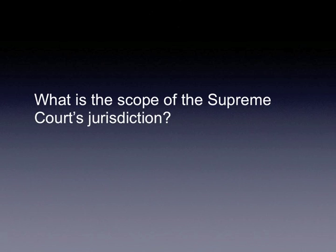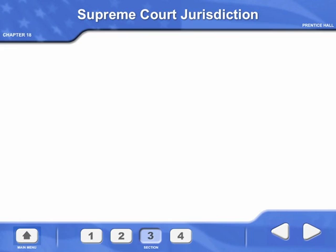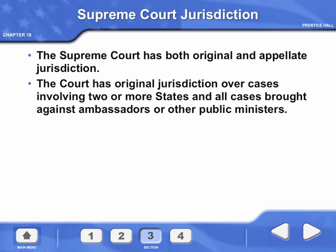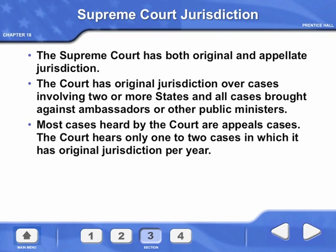What is the scope of the Supreme Court's jurisdiction? The Supreme Court has both original and appellate jurisdiction. The court has original jurisdiction over cases involving two or more states and all cases brought against ambassadors or other public ministers. Most cases heard by the court are appeals cases; the court hears only one to two cases in which it has original jurisdiction per year.